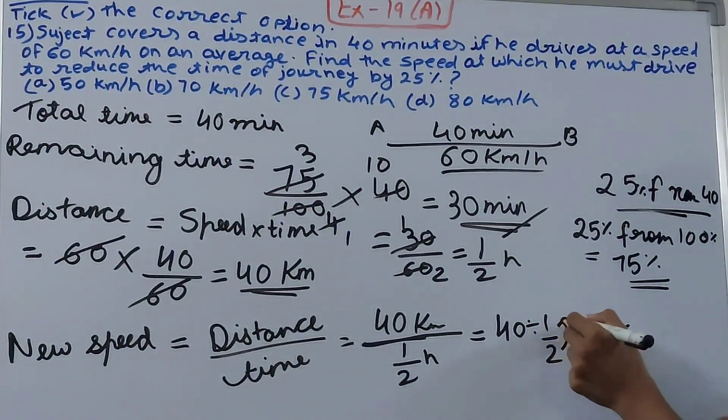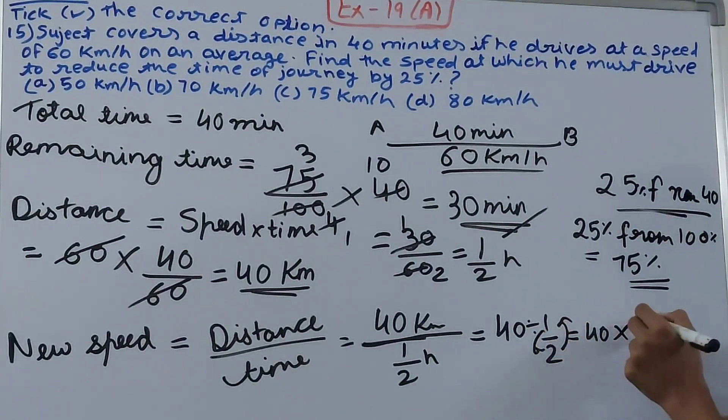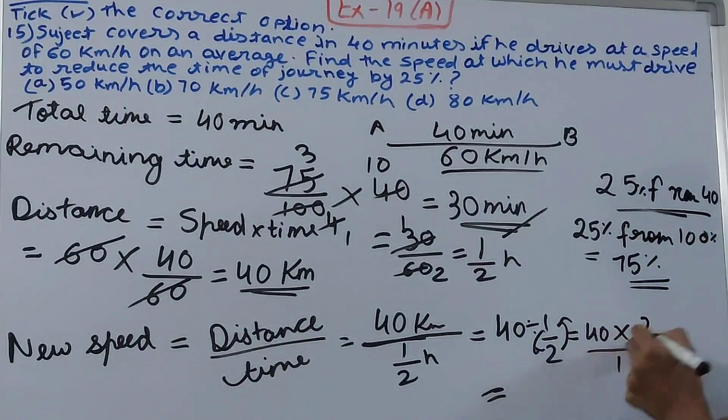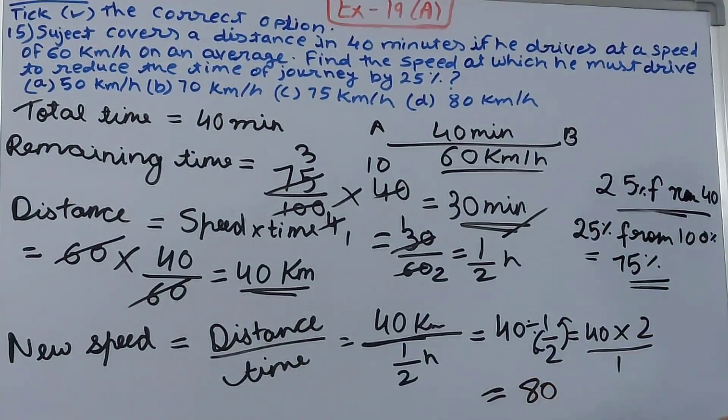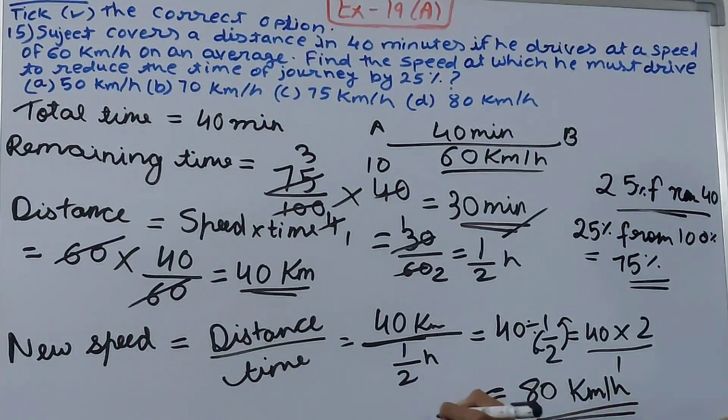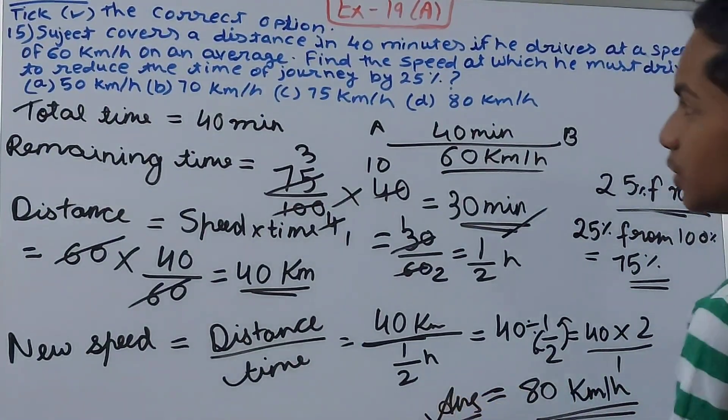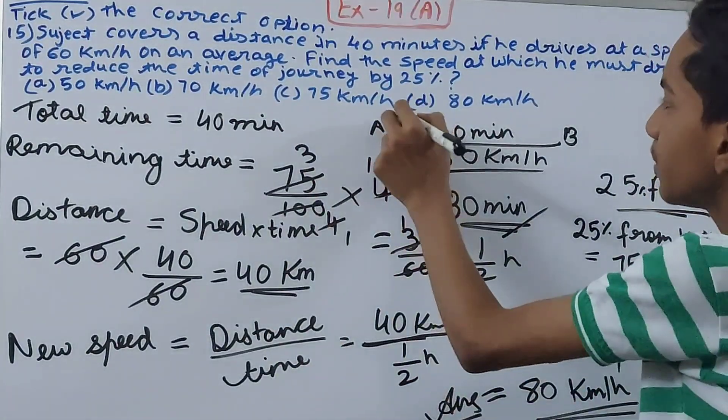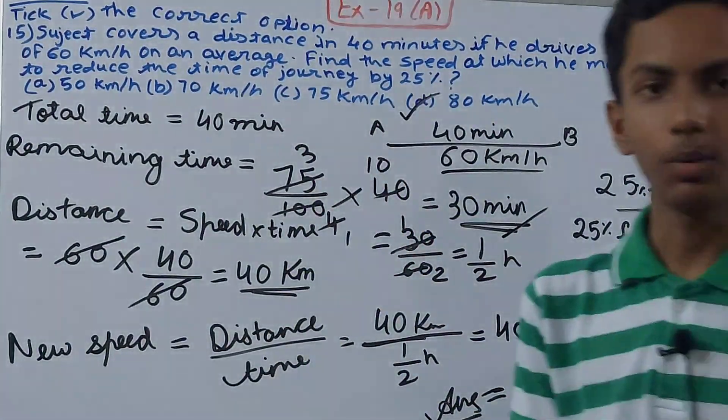So we have 40 kilometers upon 1 by 2 hours. 40 divided by 1 by 2: reciprocate, 40 division changes to multiplication, 2 by 1, so we get 40 into 2 becomes 80, 80 kilometers per hour. This becomes our answer, the new speed. Here we have option D, that is 80 kilometers per hour, so simply go ahead and tick option D.